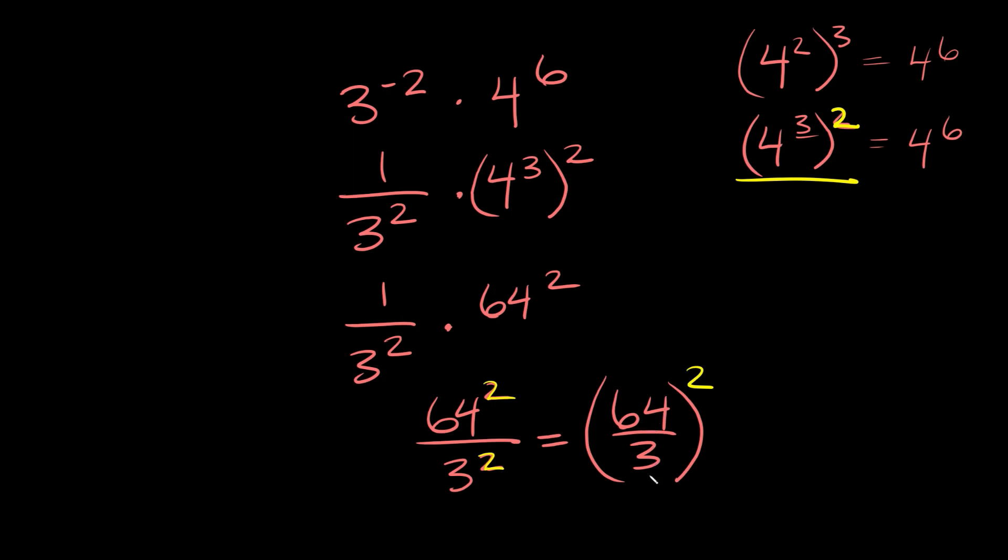Now 64 over 3, that's not a very clean answer. If you plug that into your calculator, you're going to get that 64 divided by 3 is equal to 21.333333 forever. So we can just write that as 21.3 repeating. And then we still have our exponent right here, this 2, so we'll still leave that right there. So then our answer right here is 21.3 repeating squared.